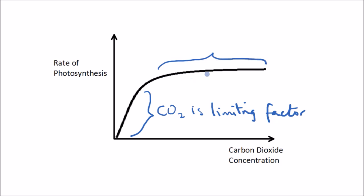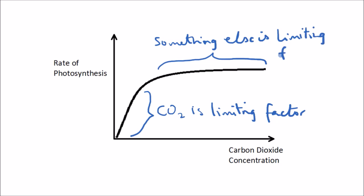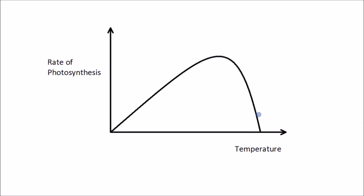Beyond that point, increasing carbon dioxide does not increase the rate of photosynthesis. Although we're increasing CO₂ concentration, the rate does not increase, which tells us that something else is the limiting factor — either light intensity or temperature is limiting the reaction at this stage, not carbon dioxide.